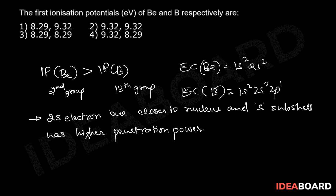Higher penetration power means the s orbital is closer to the nucleus, so removal of an electron from 2s is much more difficult compared to removal from 2p. Therefore, ionization potential of beryllium will be slightly higher than that of boron.